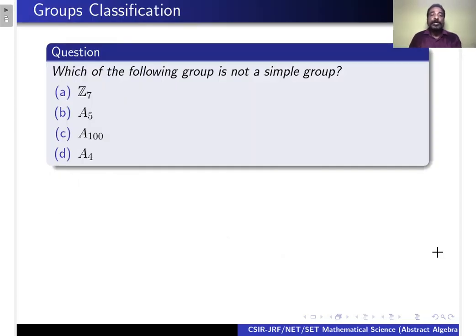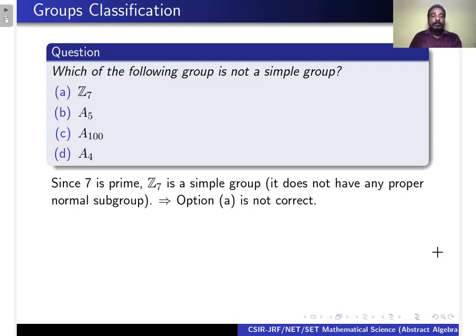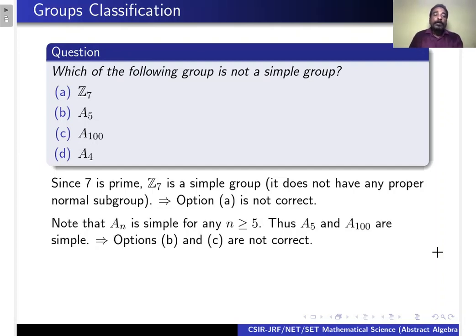The next question is: which of the following groups is not a simple group? Since 7 is prime, Z7 is a simple group because it does not have any proper normal subgroup. Therefore, option A is not correct. Note that Aₙ is simple for any n ≥ 5. Therefore, A5 and A100 are simple, so options B and C are also not correct.